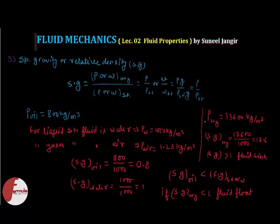We can also explain this by specific weight: oil has less weight than water so it floats, and mercury has more weight than the standard fluid so it sinks. Specific gravity is simply a comparison criteria of any fluid with respect to the standard fluid.